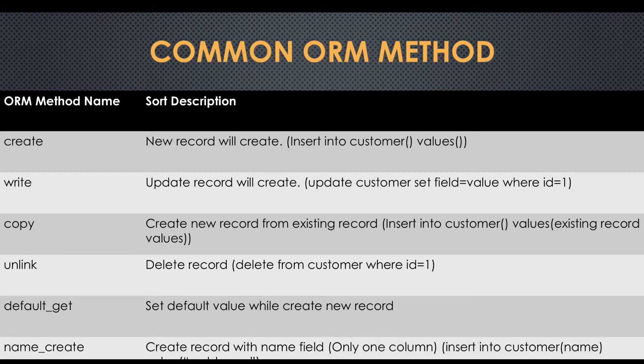The first method is the create method — this method will create a new record set. The second method is the write method — this method will update one or more than one record set. The copy method is used to create a new record based on an existing record set. The unlink method is used to delete a record from the database.